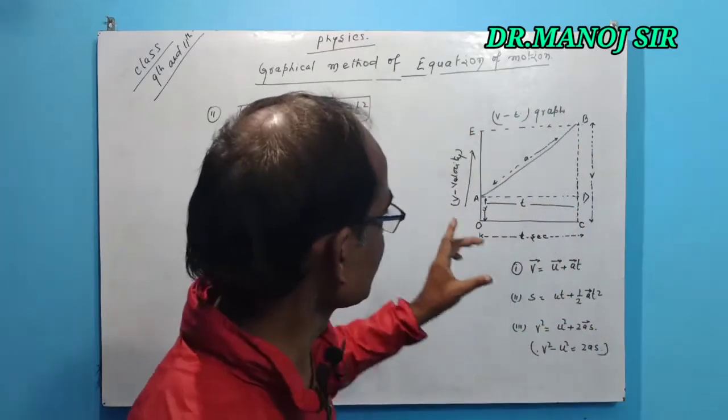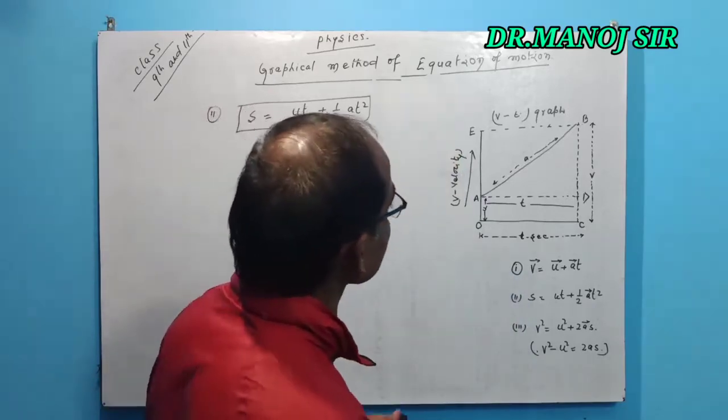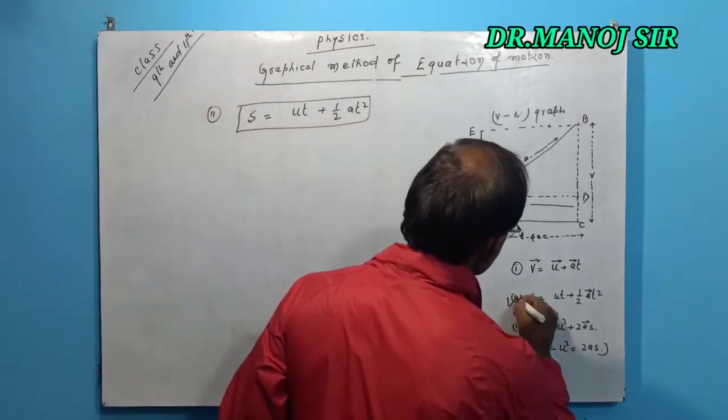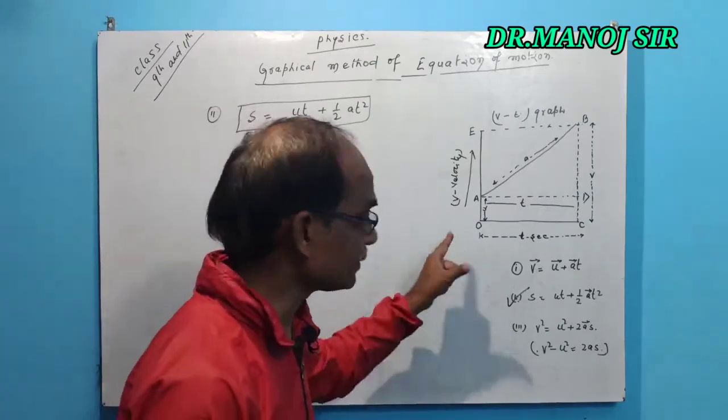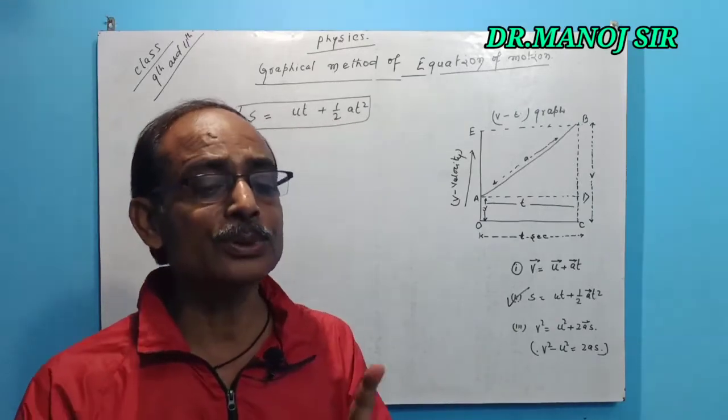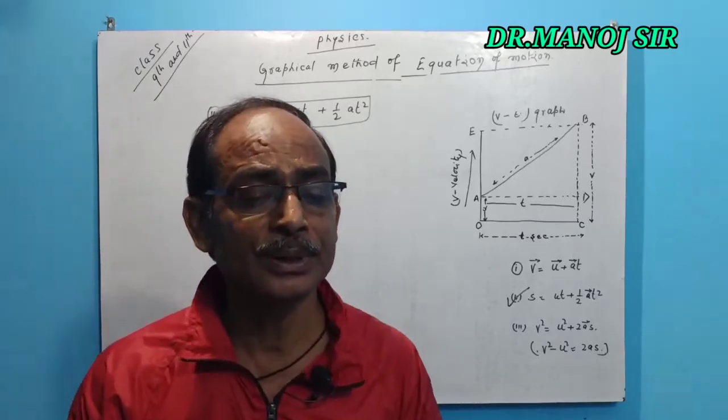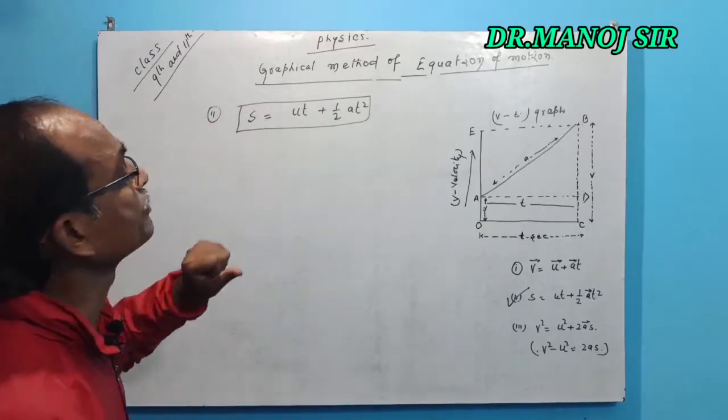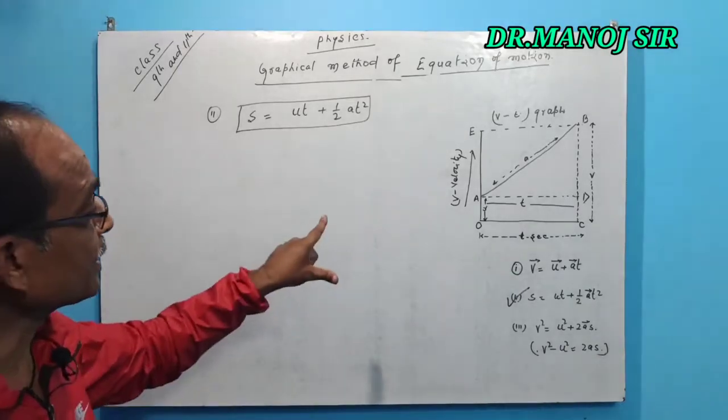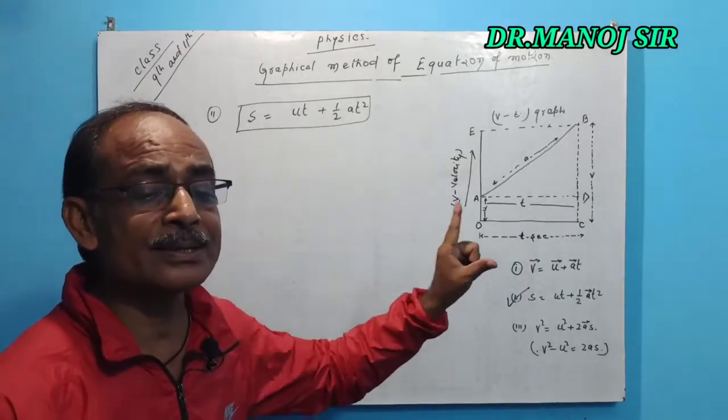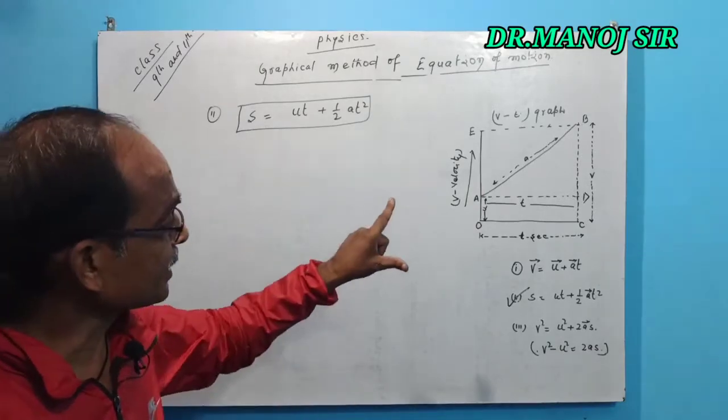According to this graphical representation, when we derive s equals u t plus half a t squared, suppose the body travels a distance s in time t.